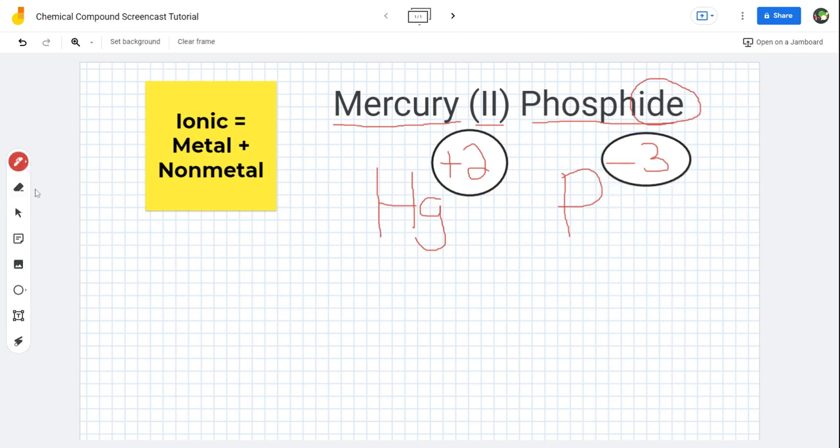So namely, mercury is going to be 3. So I put Hg with a subscript of 3 because 3 mercuries will be positive 6.